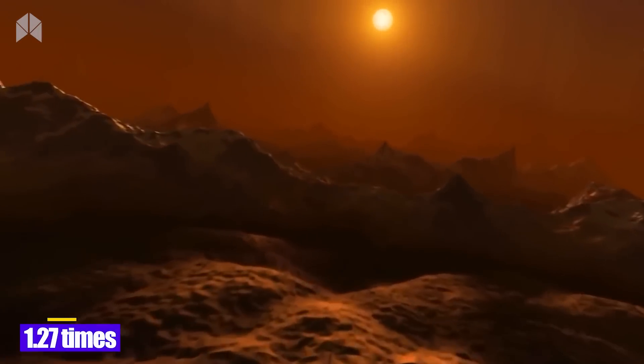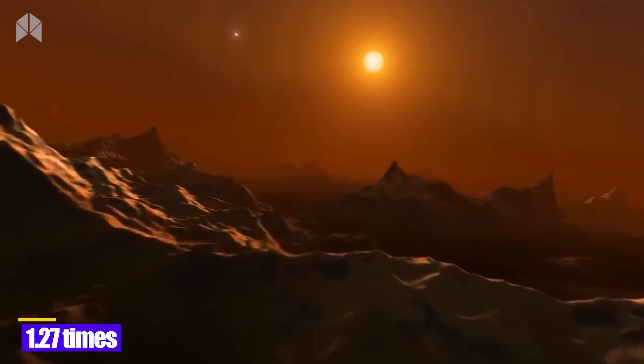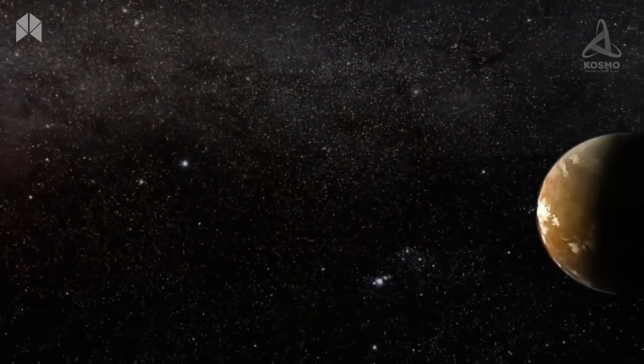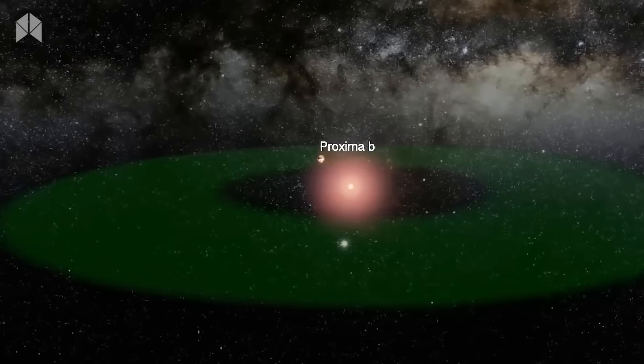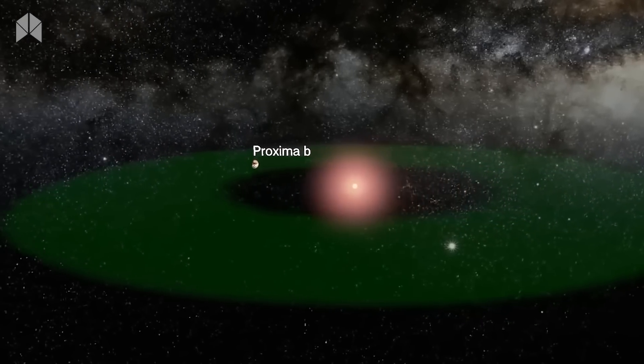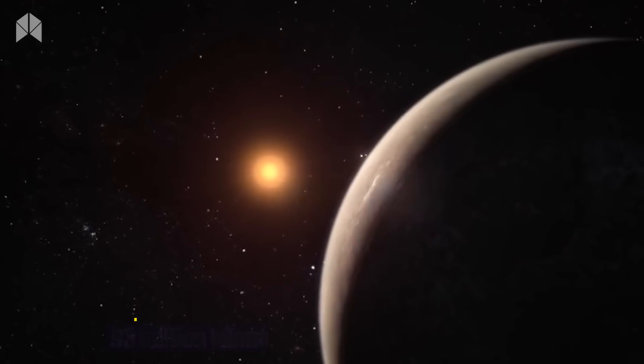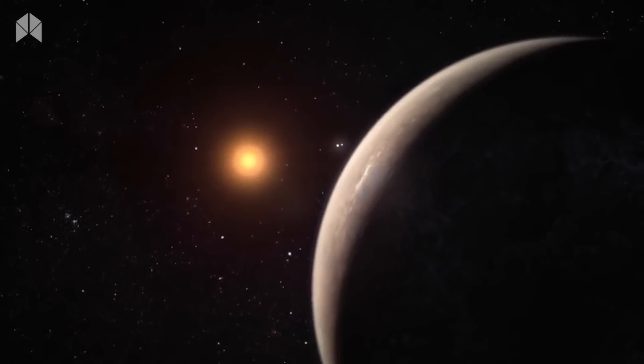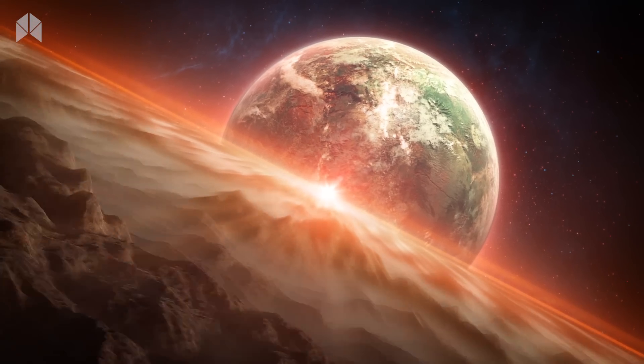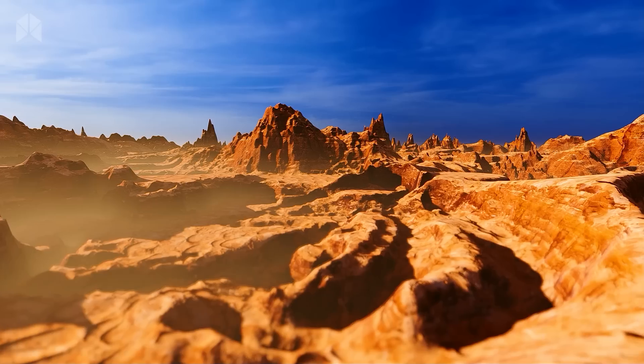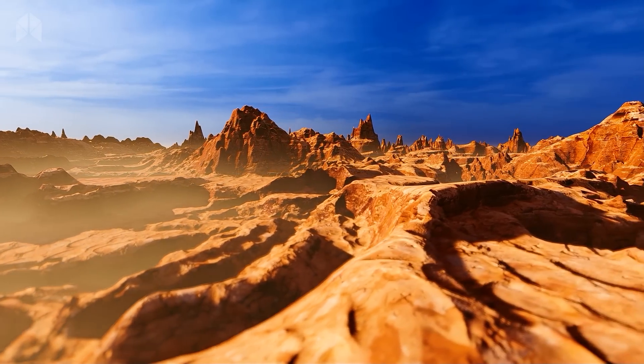Proxima b is 1.27 times the size of Earth and orbits the Sun 4.6 million kilometers away, while the distance between the Earth and the Sun is 93 million kilometers. Given that the Proxima Centauri star is far distant and 4,000 times fainter than the Sun, is there a chance that Proxima b could harbor life?